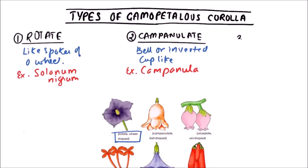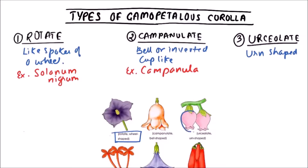The third one is Urceolate. In the Urceolate type gamopetalous corolla, an urn-shaped appearance is there. While in the previous type, Campanulate, a bell-shape appearance is there, this is an urn-shaped appearance. The example includes Bryophyllum.